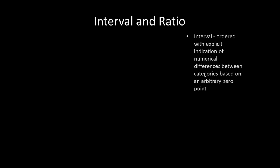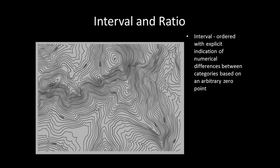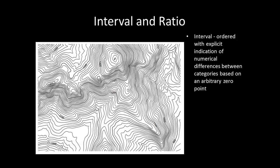Interval data is data that has been ordered with an explicit indication of numerical differences between categories based on an arbitrary zero point. The classic example of interval data is temperature. For example, 10 degrees Celsius and 10 degrees Fahrenheit will not feel the same as they use different zero starting points for their measurement. This contour map is an example of interval data being mapped — elevations shown are measured from an arbitrary zero starting point of sea level. Interval data are a form of quantitative data measurement.